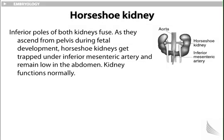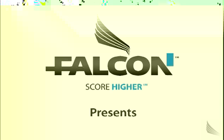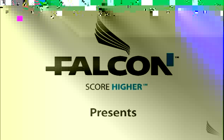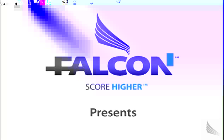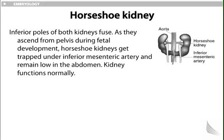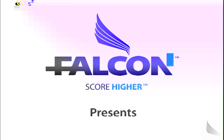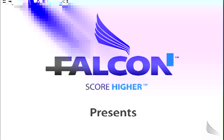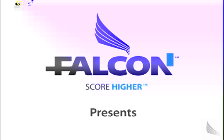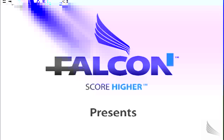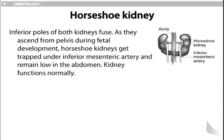Horseshoe kidney occurs when the inferior poles of both kidneys fuse. As they ascend from the pelvis during fetal development, horseshoe kidneys get trapped under the inferior mesenteric artery and remain low in the abdomen. Kidney function is normal, however. Looking at the illustration, the inferior lobes have come together and connected inferior to the inferior mesenteric artery.